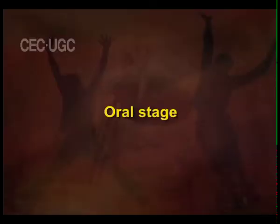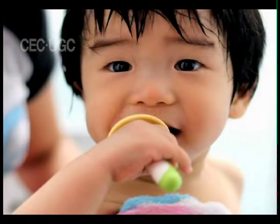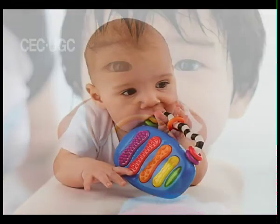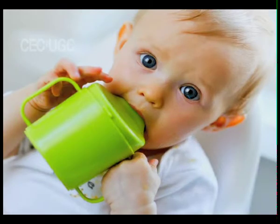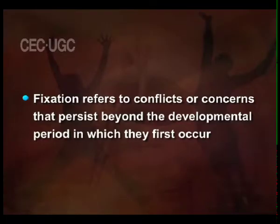In the first stage of development, called the oral stage, the baby's mouth is the focal point of pleasure. During the first 12 to 18 months of life, children suck and bite anything that fits into their mouth and strive for oral satisfaction. To Freud, this behavior suggested that the mouth is the primary site of a kind of sexual pleasure. Infants who are either overly indulged or frustrated in their search for oral gratification become fixated at this stage. Fixation refers to conflicts or concerns that persist beyond the developmental period in which they first occur.